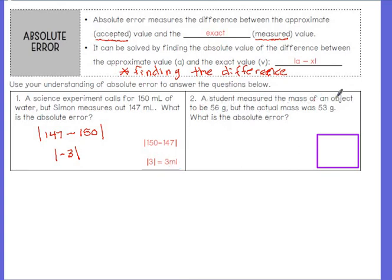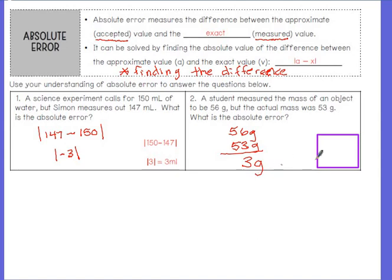Number two: a student measured the mass of an object to be 56 grams, but the actual mass was 53 grams. What is his absolute error? Basically, when they ask for absolute error, they're asking for the difference. All you really need to do is subtract your larger number minus your smaller number to find the difference. His absolute error is 3 grams — that's how much he's off. So you could do the fancy way with absolute value, or basically just subtracting to find absolute error.